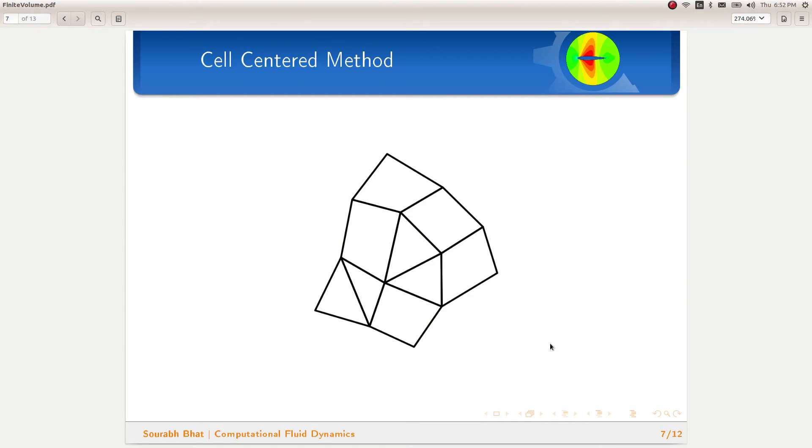The second flavor of finite volume method, the cell centered approach, uses only a single mesh made up of a single set of cells. The mesh generated by the meshing software is directly used as cells for applying the finite volume method. This makes the data structure a bit cleaner and convenient to work with. We will be using the cell centered approach for deriving the finite volume formulation.